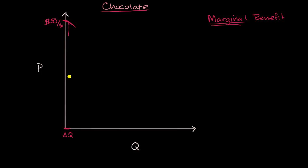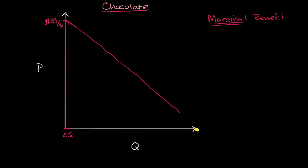We would view this as our marginal benefit curve. Notice this is exactly the same as a demand curve in the market for chocolate. We have plotted price versus quantity in the market for chocolate, but we thought about it in terms of marginal benefit.